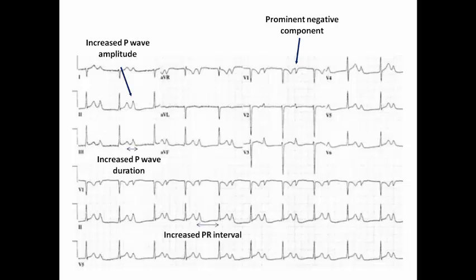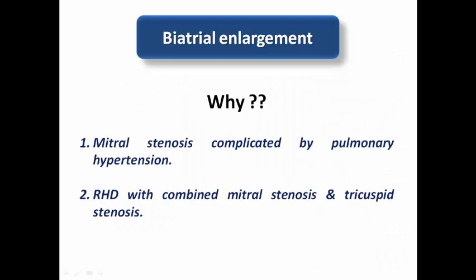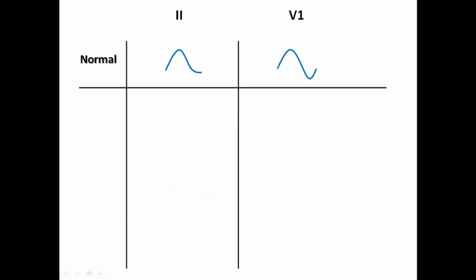Additionally in this example there is an increased PR interval with one-to-one conduction, indicating first-degree AV block. These patients have biatrial enlargement associated with first-degree AV block, and echocardiography should be performed to look for structural heart disease — for example, infiltrative cardiomyopathy. Causes of biatrial enlargement include mitral stenosis complicated by pulmonary hypertension, or rheumatic heart disease with combined mitral and tricuspid stenosis.